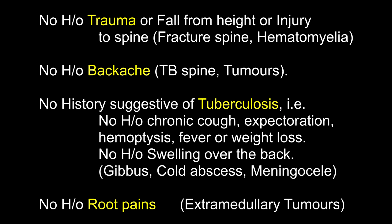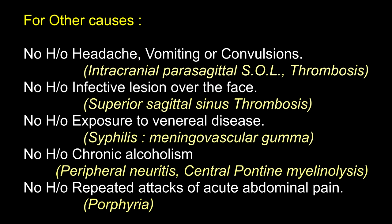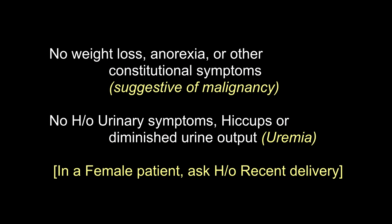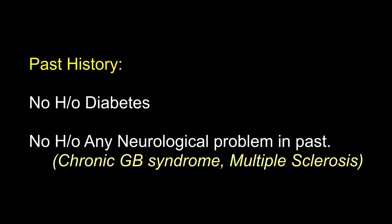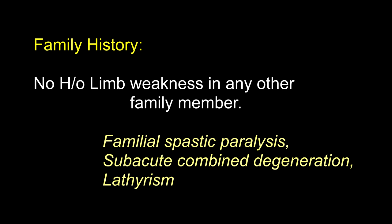There is no history of swelling over the back, no history of root pains, no history of headache, vomiting, or convulsions, no history of infective lesion over the face, no history of exposure to venereal diseases, no history of chronic alcoholism, no history of repeated attacks of acute abdominal pain. No history of weight loss, anorexia, or other constitutional symptoms suggestive of malignancy. No history of urinary symptoms, hiccups, or diminished urine output. No history of diabetes, no neurological problems in the past. Family history: no history of limb weakness in any other family member. In which conditions can paraplegia be familial? In familial spastic paralysis, subacute combined degeneration, and lathyrism.